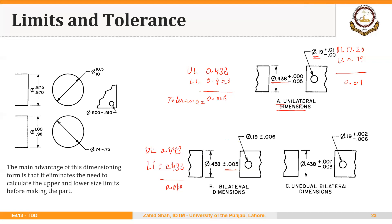This figure is showing bilateral tolerance that is not equal. We have 0.438 plus 0.007 minus 0.003. So the upper limit of size will be 0.445 and the lower limit will be 0.435. The tolerance here will be 0.010, but the upper and lower limits of size will be different from those in the equal bilateral case.